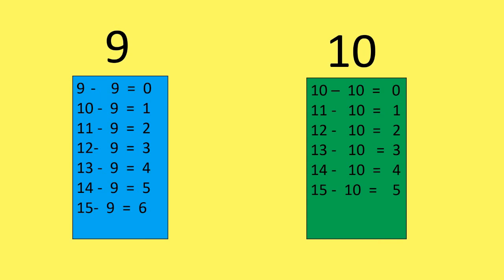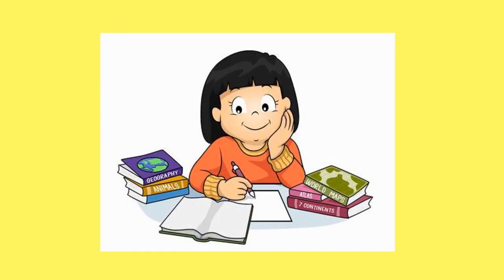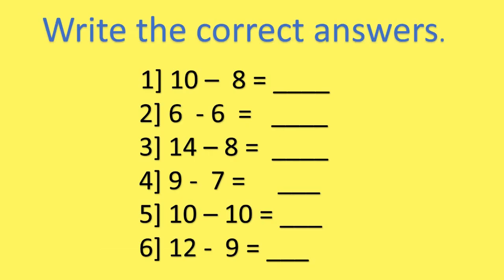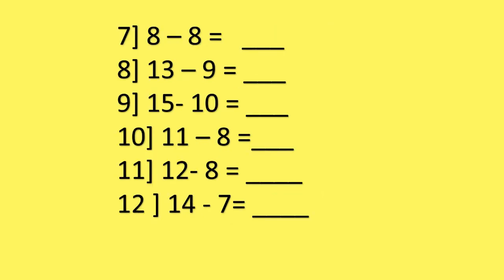Today's homework will be: Write the correct answer. 10 minus 10 is equal to dash. 14 minus 8 is equal to dash. 13 minus 9 is equal to dash. 15 minus 10 is equal to dash. 11 minus 8 is equal to dash. 12 minus 8 is equal to dash. 14 minus 7 is equal to dash.